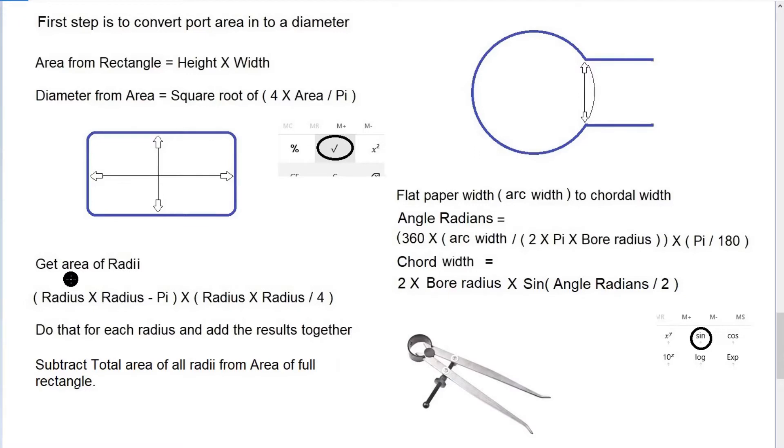Once you've got the radius, we can use the equation to subtract each radius from the whole area of the rectangle. We've calculated the area of the rectangle, which is height times width, keeping in mind that area is like a window pane, it's two-dimensional, so if these are in millimeters it's millimeters squared. What we do is calculate the rectangle first, then work out the area of each radius using this equation: radius times radius minus pi times radius times radius divided by 4. That will give you an area in square millimeters, and then you subtract it from the area of the whole rectangle. Do the same for each radius, then subtract the total area of all radii from the area of the full rectangle.